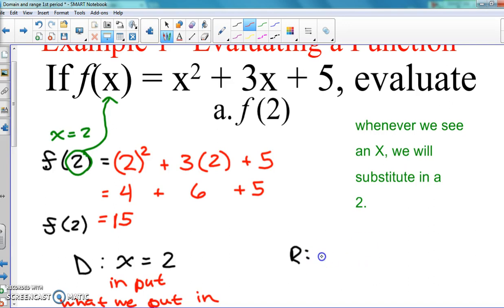All right, and then range is what we get out as your answer, as we said. So in other words, again, this is our answer. So what is our answer for this problem? And make sure you save the whole thing. So our range is the answer, which is f(2) = 15.